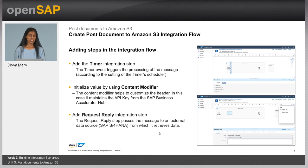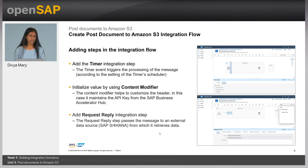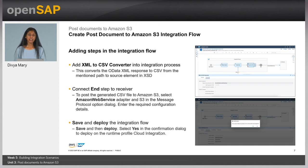Another integration step that we would be using is called the request reply step. This allows you to connect to external applications. In this case, we would be connecting to the API sandbox available in SAP Business Accelerator Hub to connect to an OData API from S4HANA Cloud. The next thing is the different sets of transformation-related capabilities available in SAP Cloud Integration Suite. In this case, we would be using the XML to CSV converter.